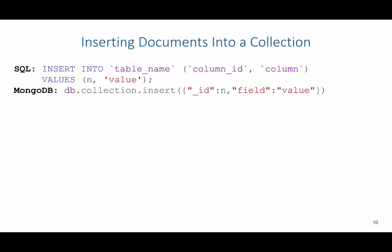In MongoDB, we would say db.the name of the collection.insert, and then in between the parentheses we're going to have curly brackets, and then we'll have each field in quotes with a colon and then the field value next to it. For example, id colon and then a number, and then field colon a value.